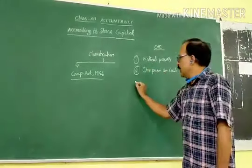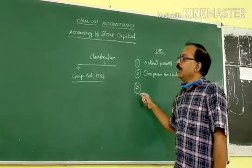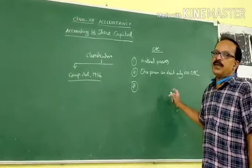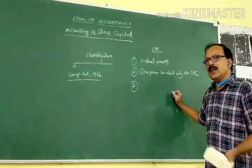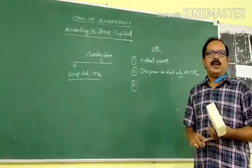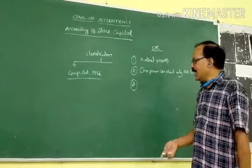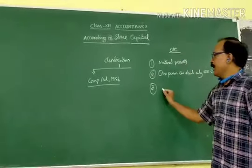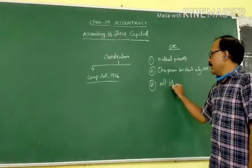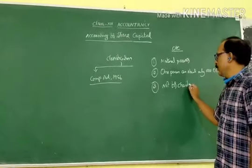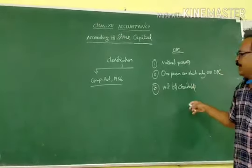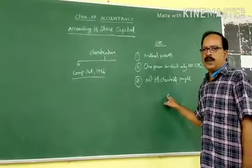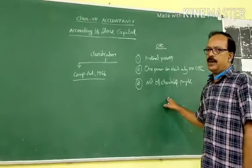The third feature: in the case of other companies — private limited or public limited — the motive of the company may be profit or non-profit. But in OPC, you are not supposed to start it for charity purposes. OPCs are established only for the purpose of business only.